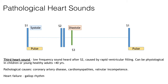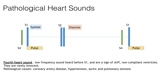You may have heard the term gallop rhythm when reading about S3. A true gallop rhythm is when S3 is paired with tachycardia, and this happens in heart failure — it sounds similar, just a little bit faster due to the tachycardia. The second added heart sound is S4 — a low frequency sound heard before S1 and a sign of stiff, non-compliant ventricles. This is rarely innocent; its pathological causes are coronary artery disease, hypertension, and aortic and pulmonary stenosis.